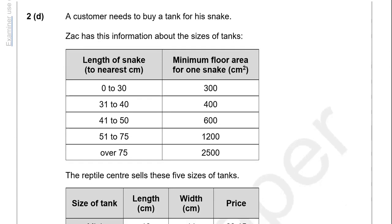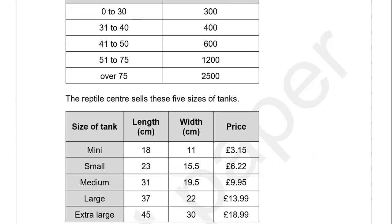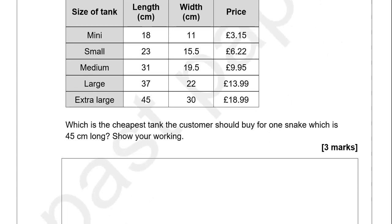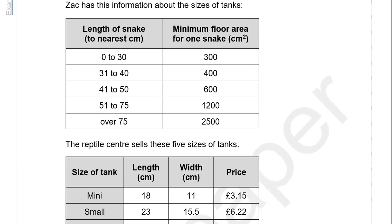A customer needs to buy a tank for his snake. Zach has information about the sizes of tanks — the reptile centre sells five sizes. Which is the cheapest tank the customer should buy for one snake which is 45 cm long? The snake length is 45 cm, which is between 41 and 50, meaning a minimum floor area of 600 cm squared is required.